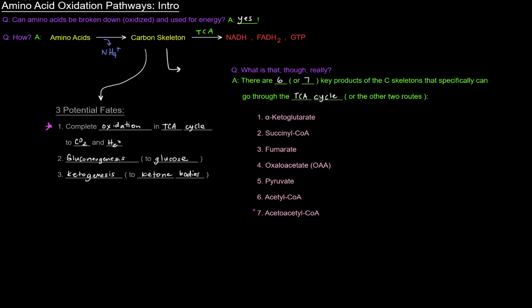But I'm not going to really think about acetoacetyl-CoA too much. I'm going to take it to basically be just acetyl-CoA, because acetoacetyl-CoA is just a four-carbon acyl-CoA that can be cleaved into two acetyl-CoAs. So, when I think about carbon skeletons being broken down to key products, the acetoacetyl-CoAs just get turned into acetyl-CoAs anyway. So, I'm really going to think about it being six key products, and that's these guys.